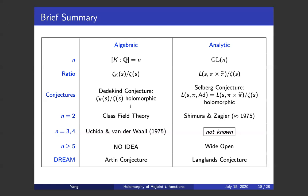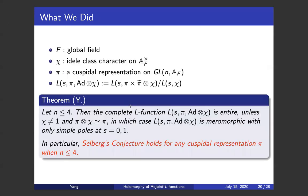So what we did here is prove the GL3 and GL4 cases. Here's our main theorem. Let F be a global field — you can think of F as Q. Let chi be a unitary Hecke character on the ideles of F — you can think of chi as trivial. Let pi be a cuspidal representation on GL_n. And let L(s, pi) be the adjoint L-function — the analytic ratio. For n less or equal to 4, we can show that the complete L-function is entire, which of course implies the finite L-function is entire as well. Roughly speaking, we can show Selberg's conjecture holds for any cuspidal representation where n is less or equal to 4.